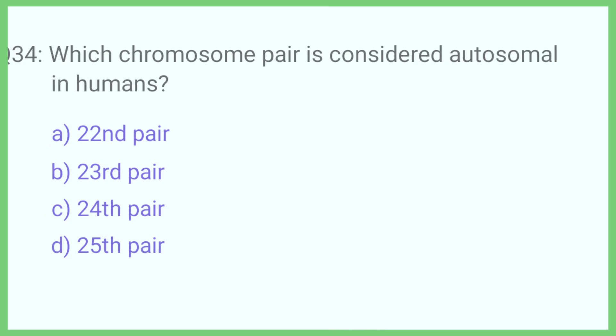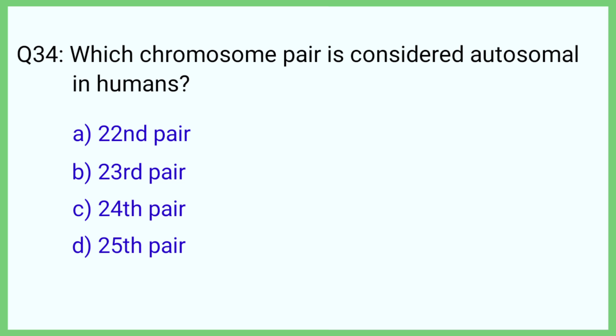Question number 34. Which chromosome pair is considered autosomal in humans? The correct answer is option A: 22nd pair.